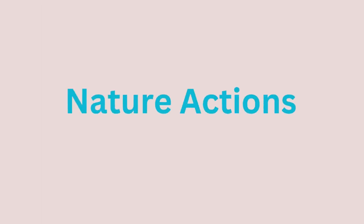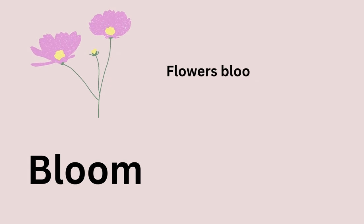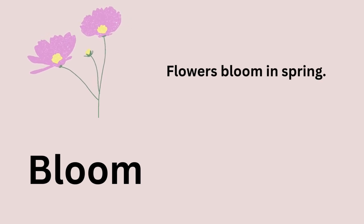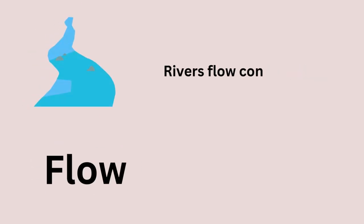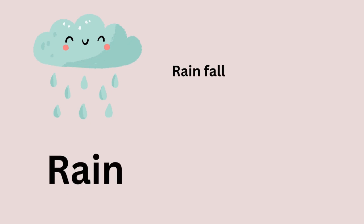Nature Actions. Bloom — flowers bloom in spring. Flow — rivers flow continuously. Rain — rain falls from the sky. Blow — wind blows through the trees.